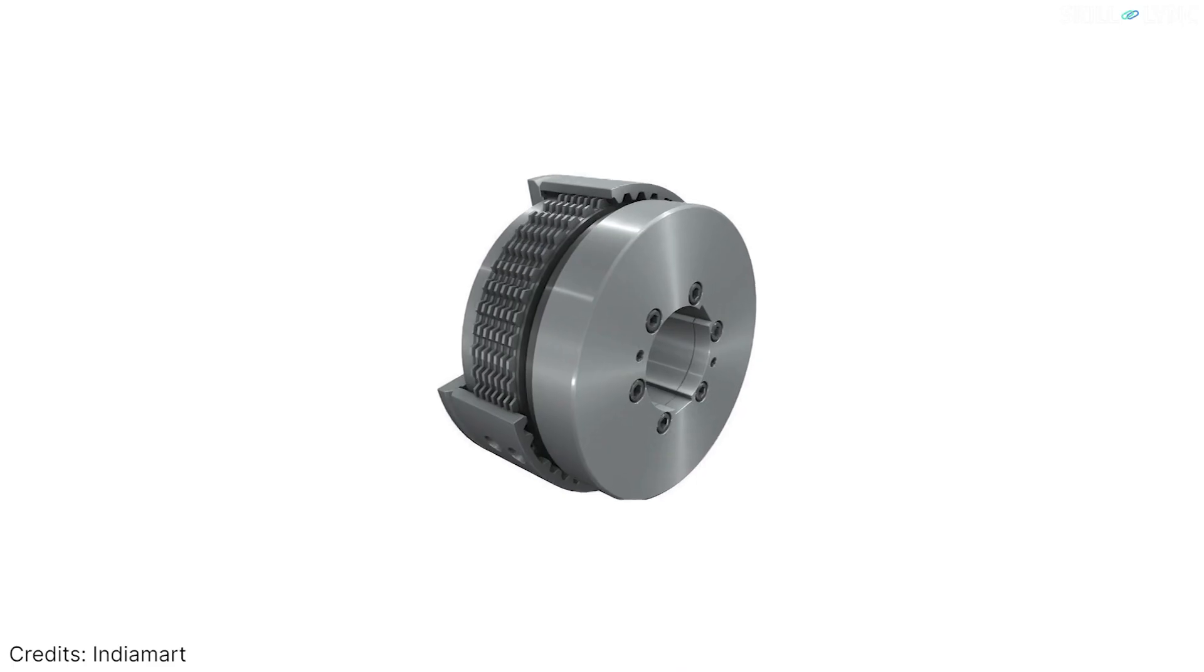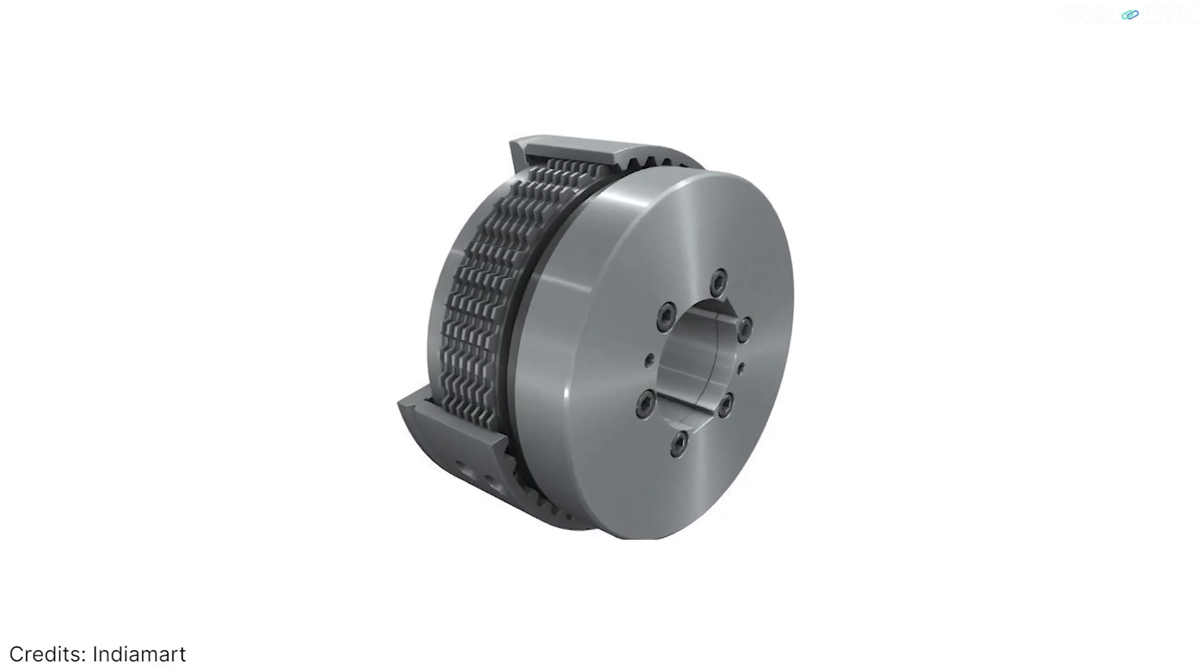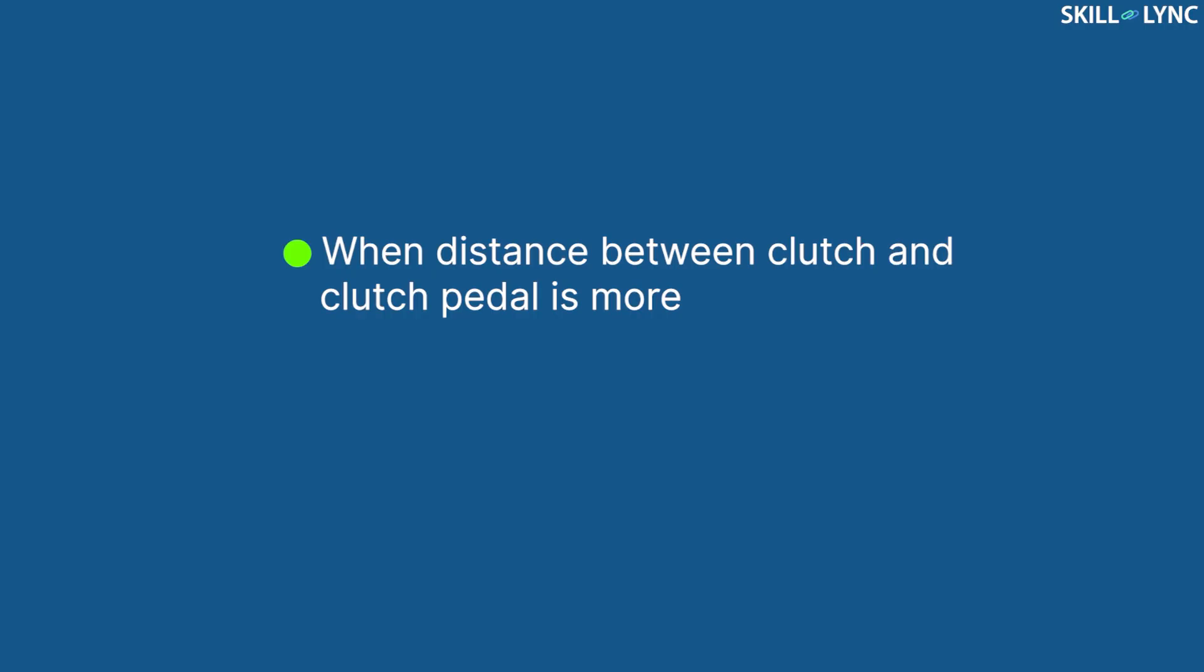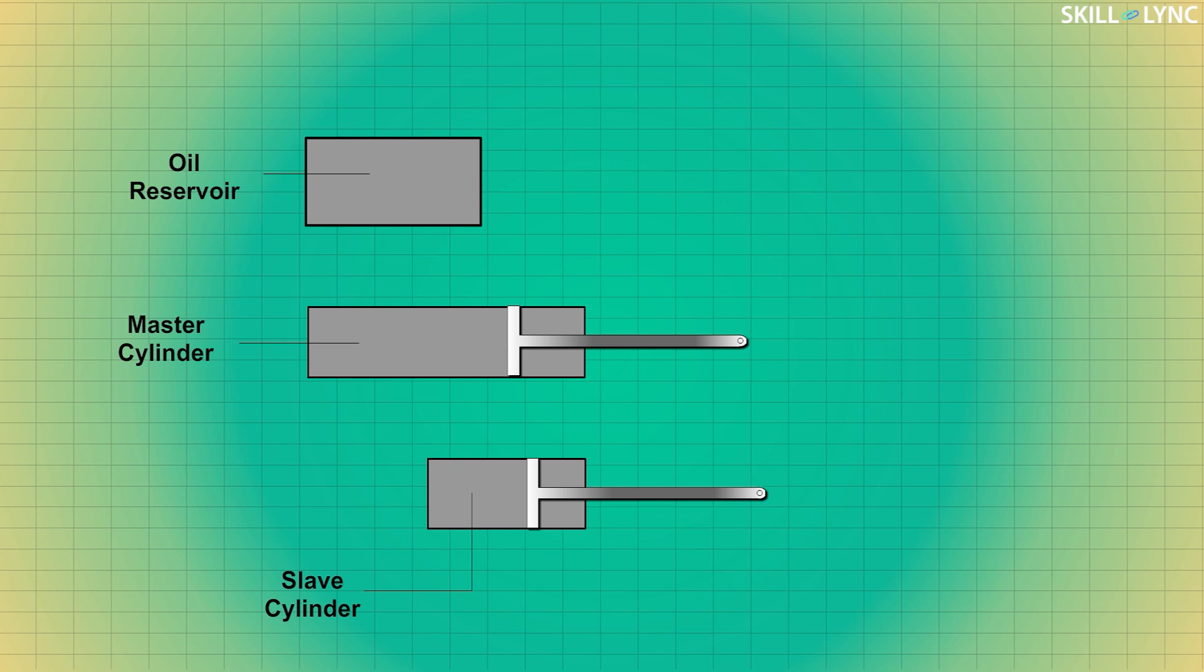Hydraulic clutches employ hydraulic pressure for disengaging the clutch. It is usually preferred where the distance between the clutch and clutch pedal is more. It's also used in heavy vehicles where huge effort is required to operate the clutch. The hydraulic clutch consists of a reservoir, master cylinder, and a slave cylinder. The reservoir is filled with hydraulic fluid and the master cylinder is connected to it.